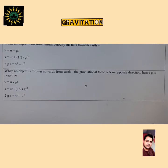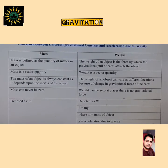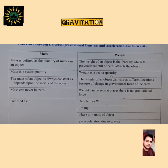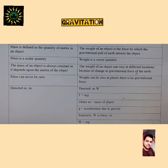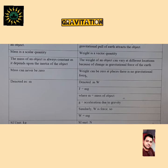Difference between mass and weight: Mass is defined as the quantity of matter in an object; it is a scalar quantity and always constant, depending on the inertia of the object. Weight is the force by which the gravitational pull of Earth attracts the object; it is a vector quantity directed toward the center of the Earth. The weight of an object can vary at different locations because of changes in gravitational force.